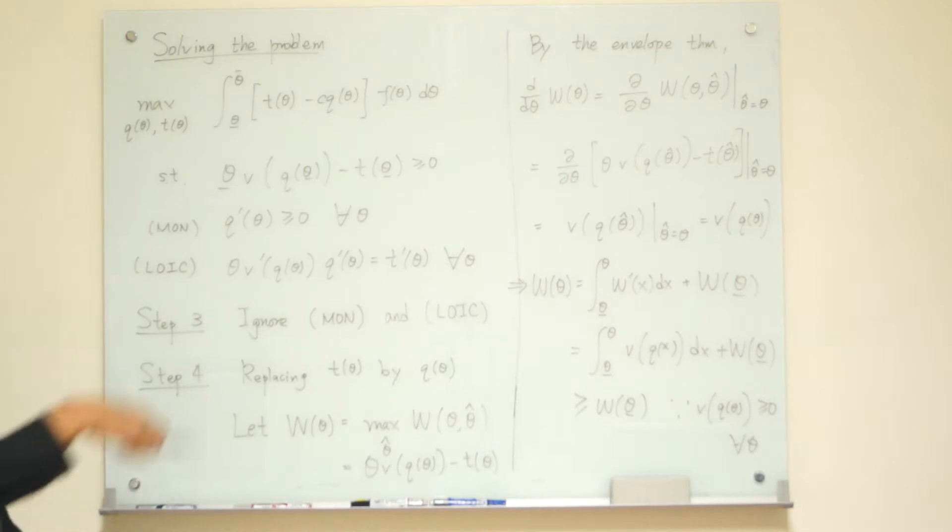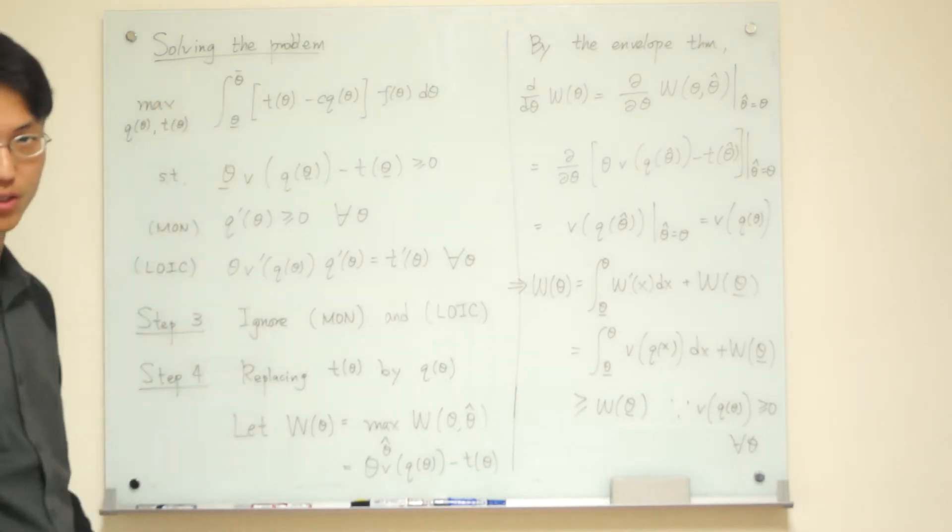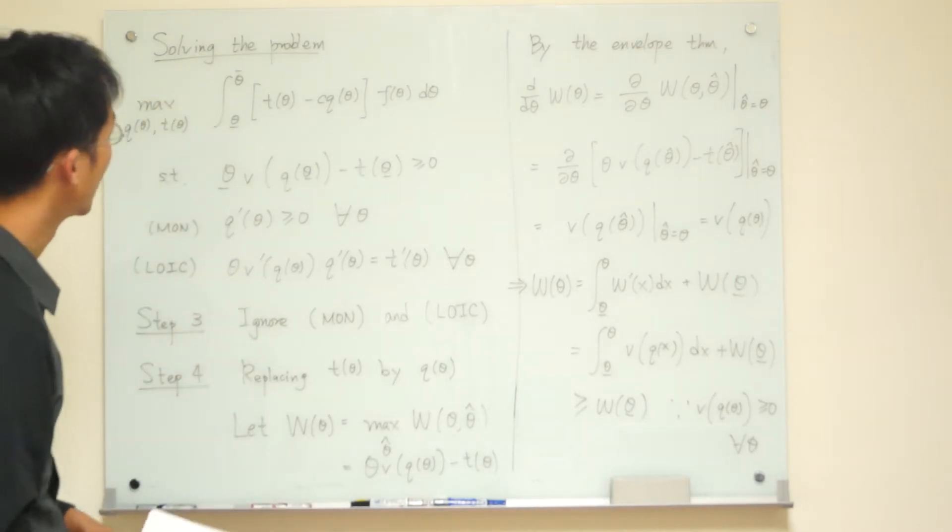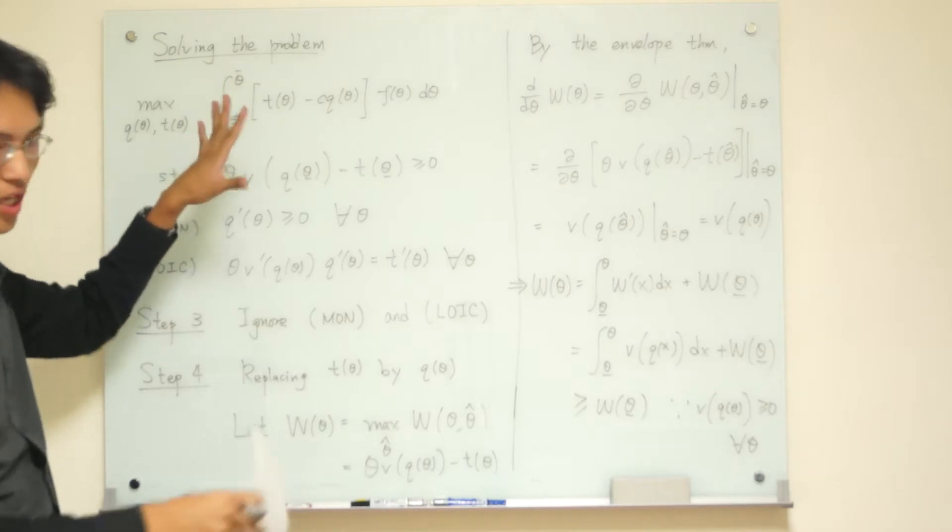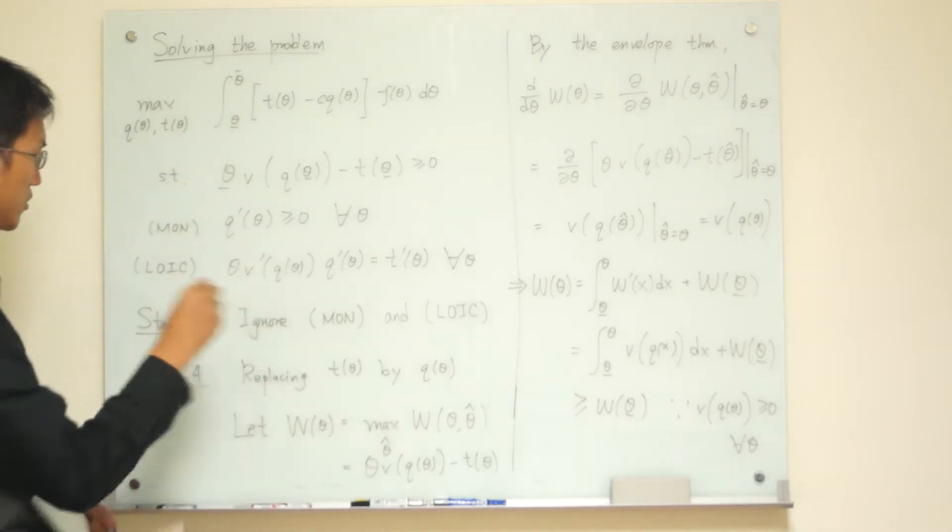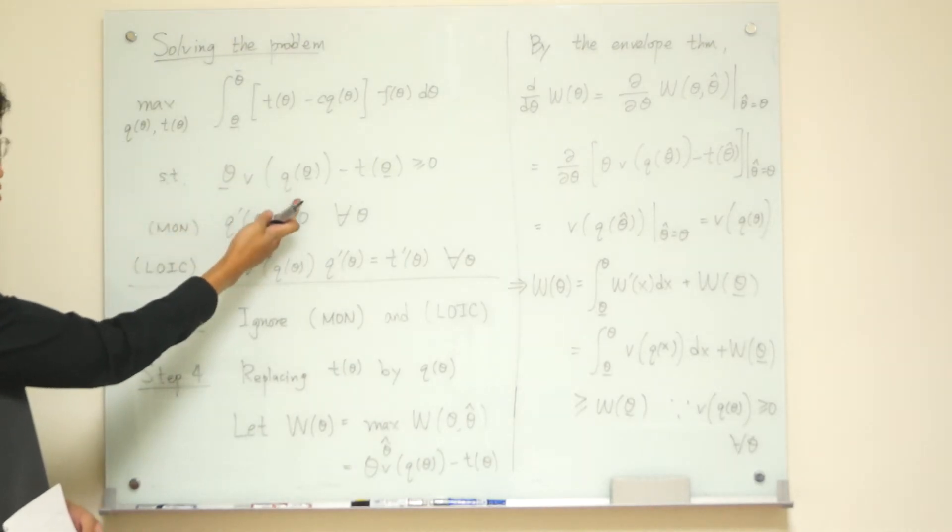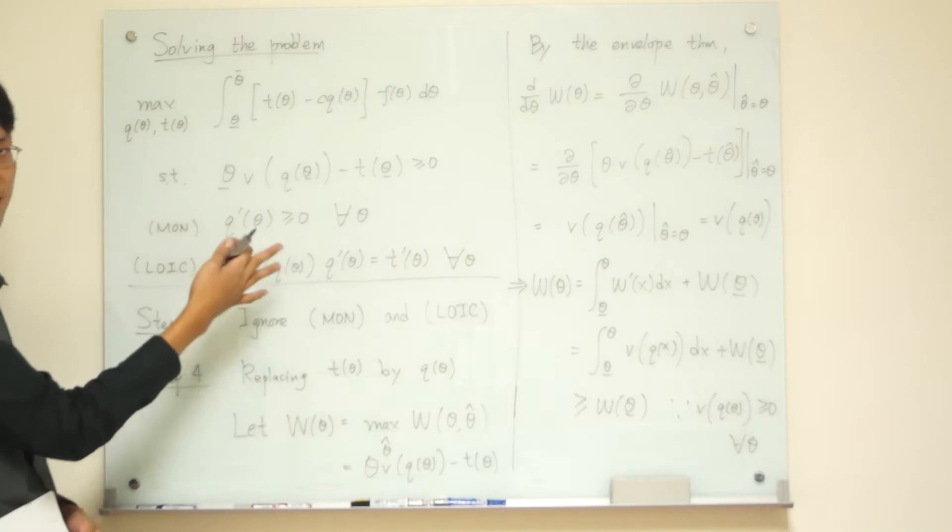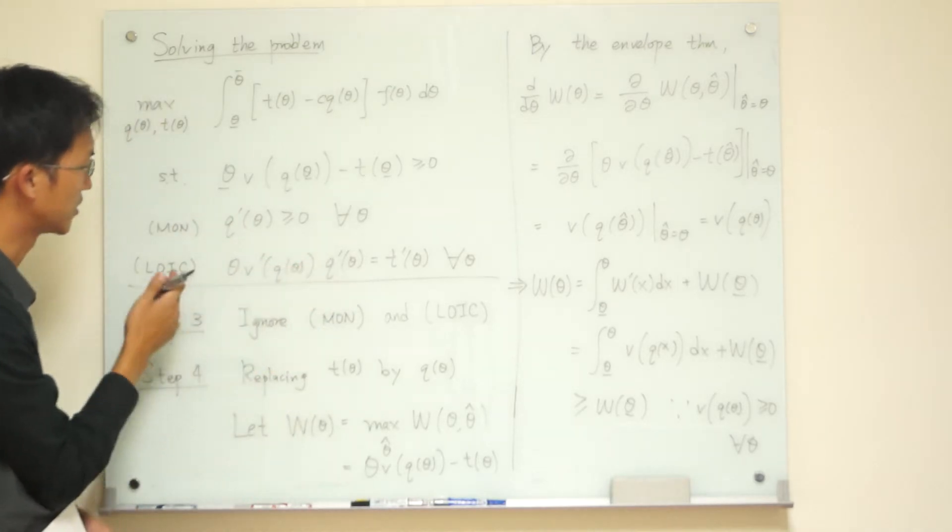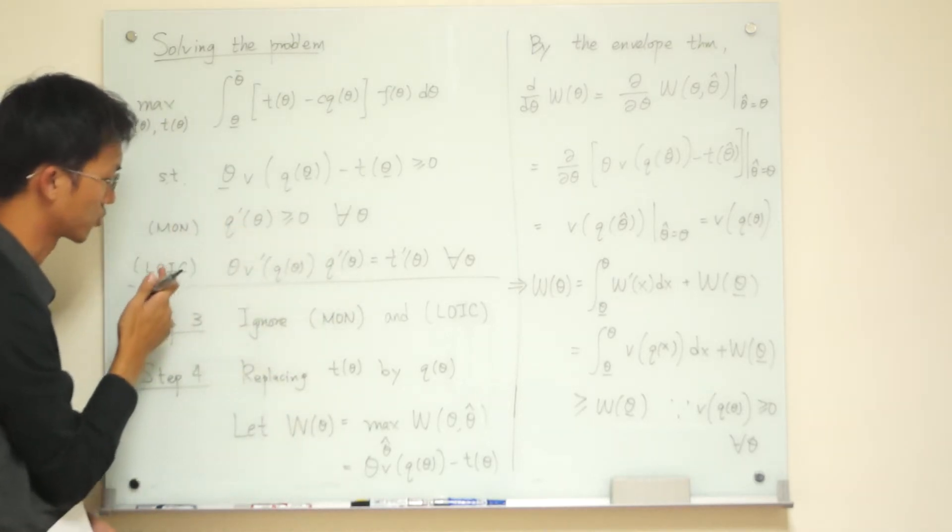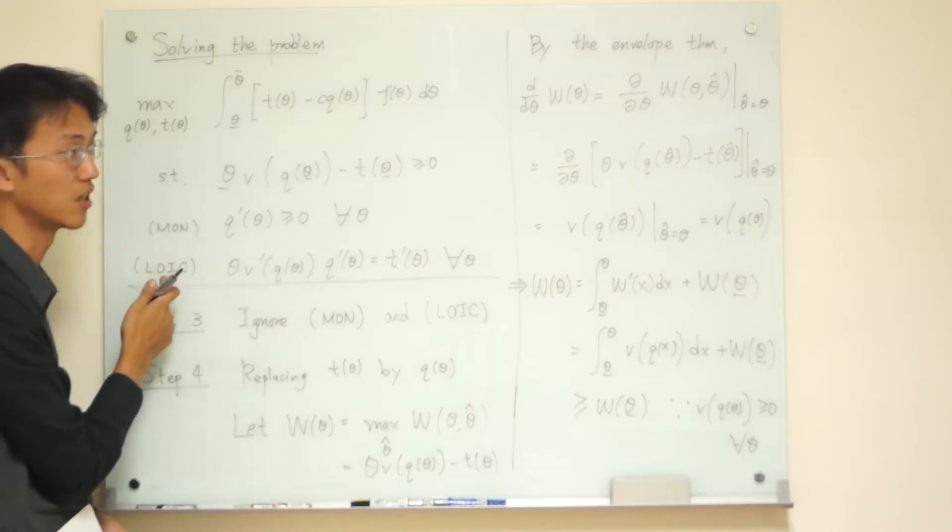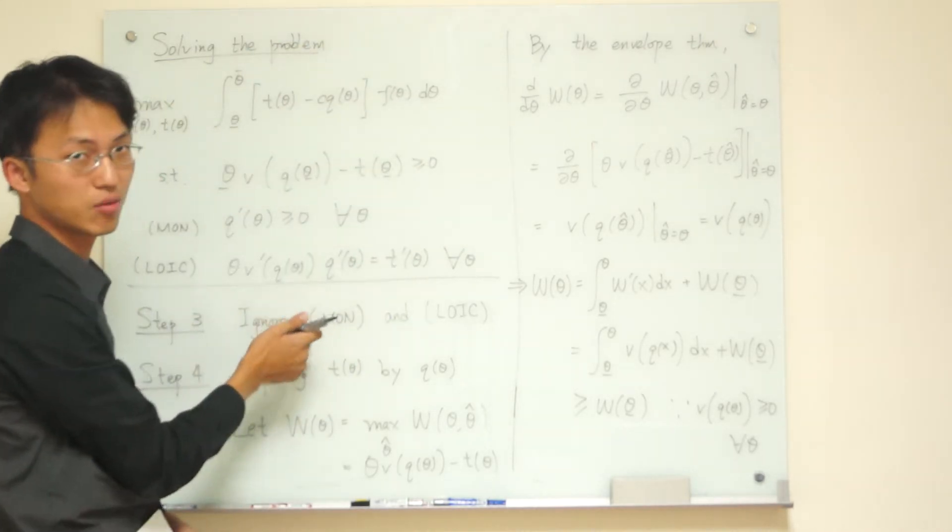Okay, let's continue. So now we're going to solve our reduced problem. The problem here has become this one. I still have IR constraint, but this is only for the lowest type. And also, the IC constraint has been replaced by monotonicity and the local IC. This is my reduced problem. I'm going to solve it and find optimal solution in this video.